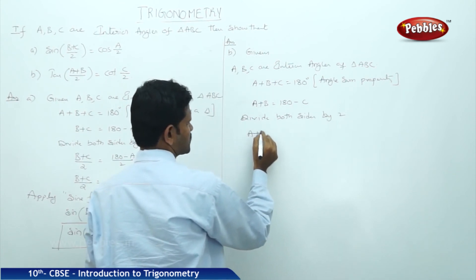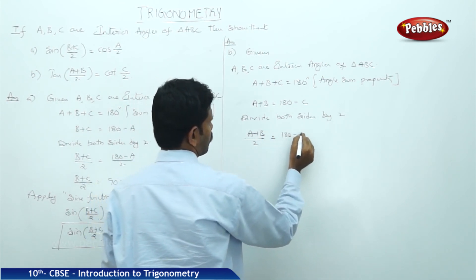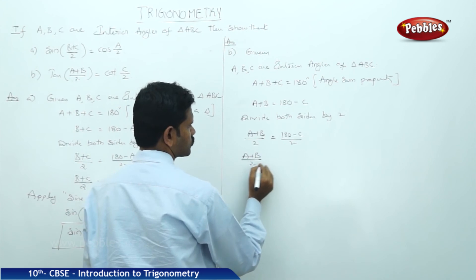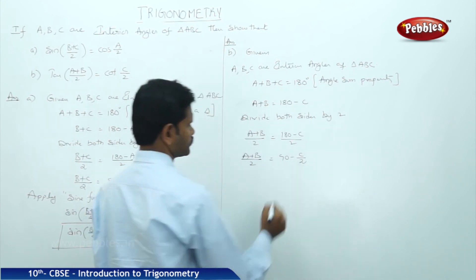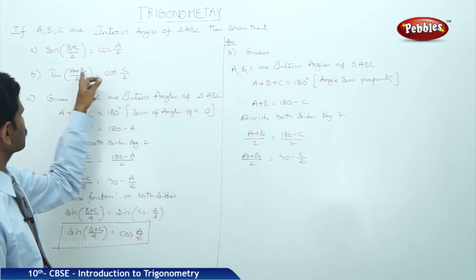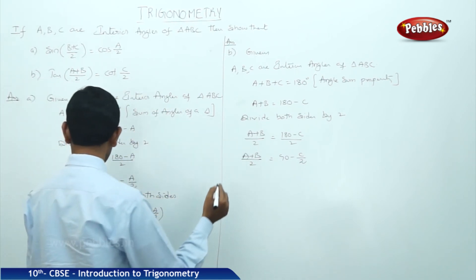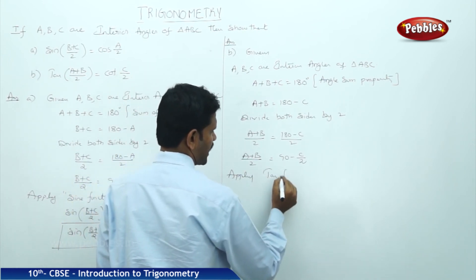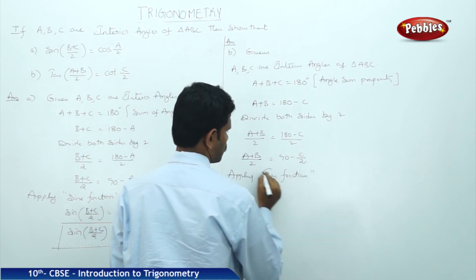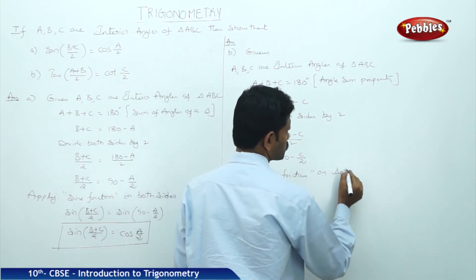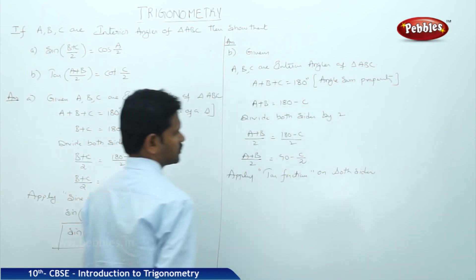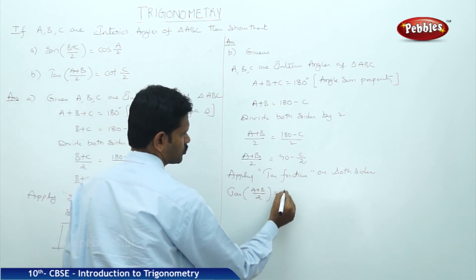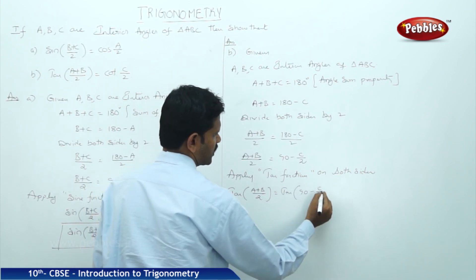That is, (A + B)/2 = (180 - C)/2. That is, (A + B)/2 = 90 - C/2. In the question, (A + B)/2 is associated with the tan function. So apply the tan function on both sides. tan((A+B)/2) = tan(90 - C/2).